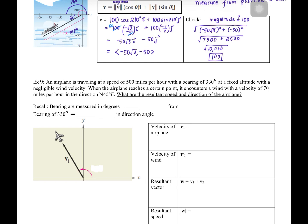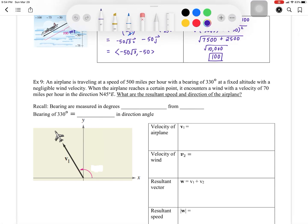To get us started, let's recall that bearings are measured in degrees clockwise from the north. So when they say 330 degrees, this is north, east, south, and west. Wherever north is, that's going to be 0 degrees. And then when you get to east, that's 90 degrees. And south is 180 degrees. And then west is 270 degrees.